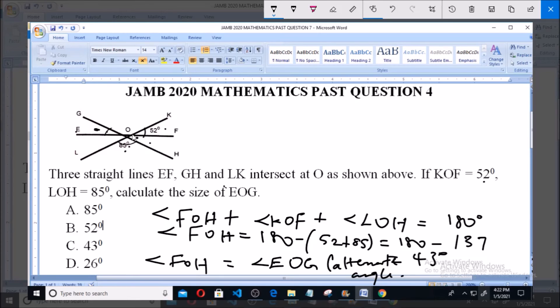angle because they are alternate angles. So therefore angle EOG is equal to 43 degrees, and that is option C. Thank you, and please subscribe to the channel for more videos and past questions.